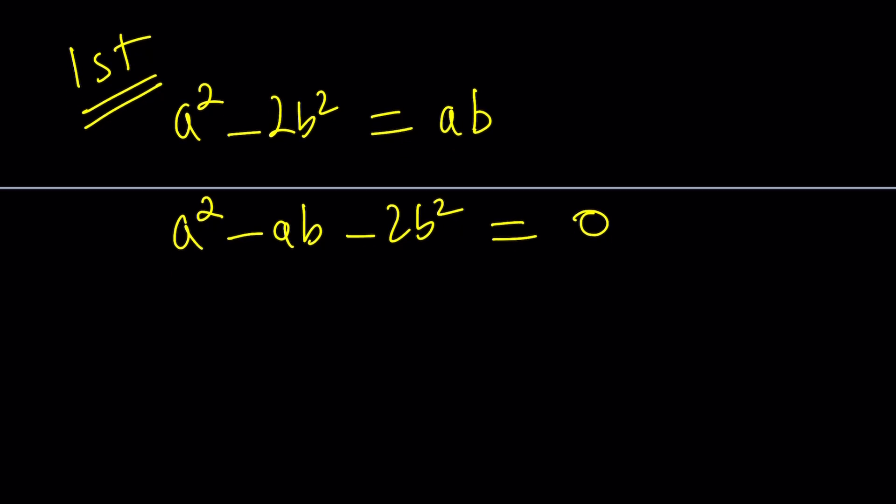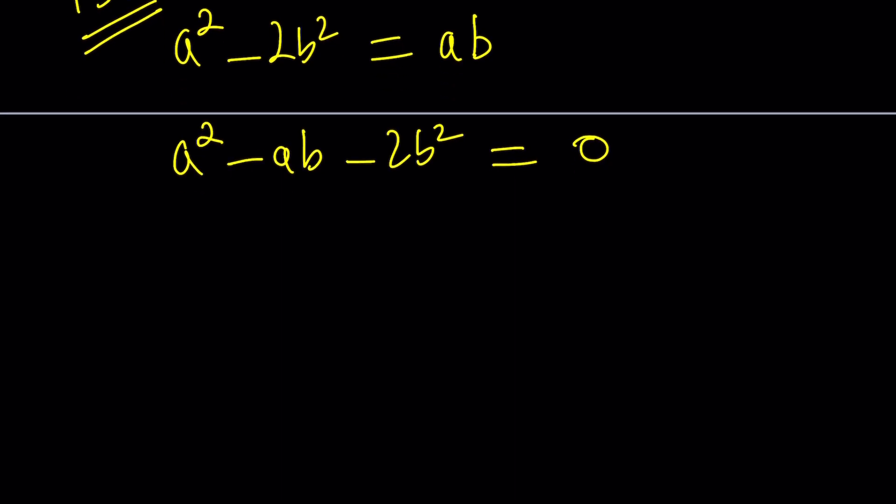One thing I can do is try to factor it. How do we factor these kinds of things? There's a couple of different ways. One is called the x method. For example, when you have something like 3x squared plus 2x minus 5.